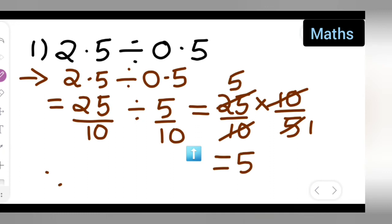Therefore you can write down 2.5 divided by 0.5 is equal to nothing but 5.